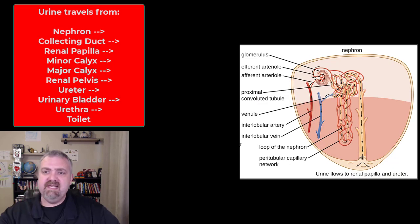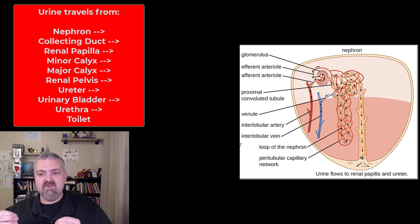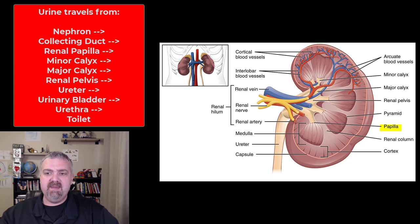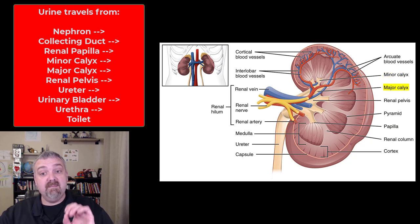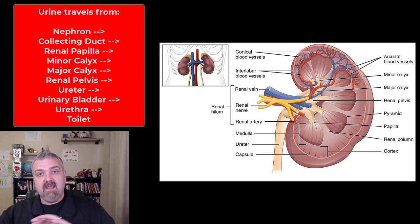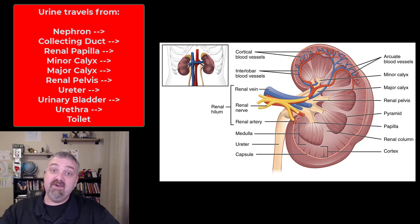The collecting ducts drain urine through the system: about 30 collecting ducts fuse to form the renal papilla, found at the end of the renal pyramid. From there, urine drains into a minor calyx, which fuses to become a major calyx, which drains to the renal pelvis, then to the ureter, the bladder, the urethra, and the toilet. So we've gone from fluid being filtered out of your blood, to everything needed being reabsorbed, and what's not needed — plus excess — being lost in urine. That's the nephron and how it works.